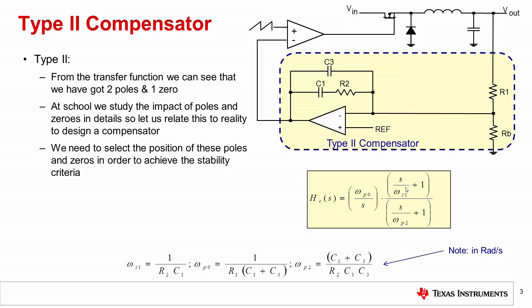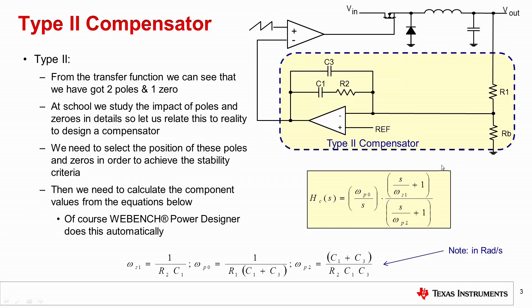We need to select the position of these poles and zeros in order to achieve the stability criteria. Then we need to calculate the component values and these are usually related to the equations and again we will have studied this in many subjects at school. The component values are related to the position of the poles and zeros and please note that these are in fact in radians. And of course WebBench will design these automatically, place the poles and zeros automatically and then calculate the components automatically.